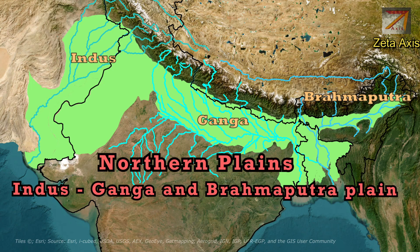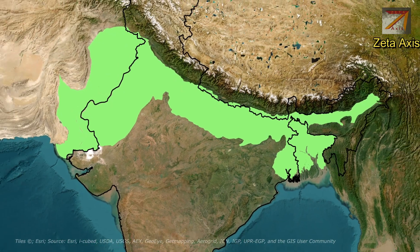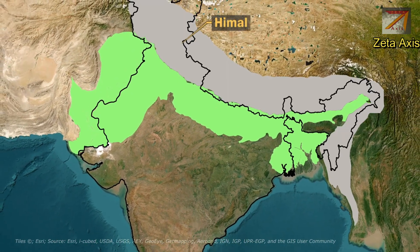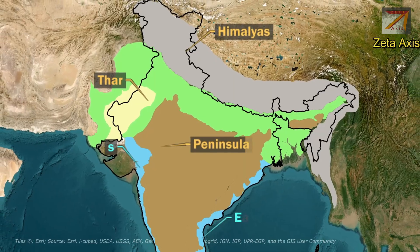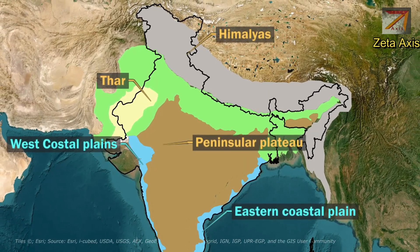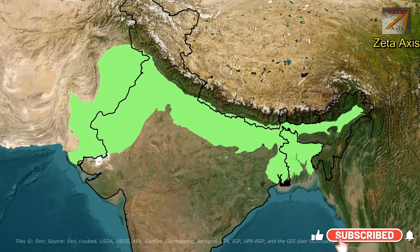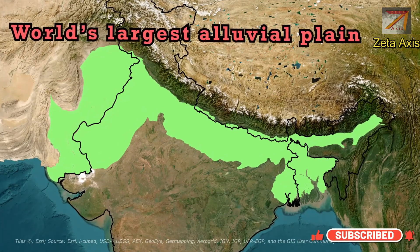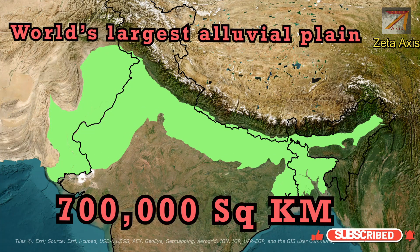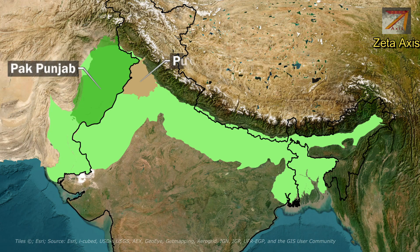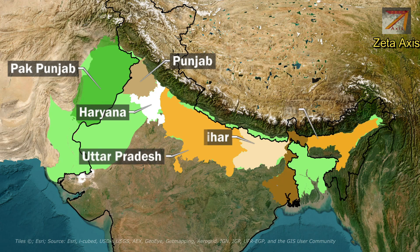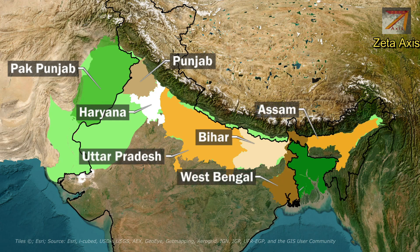The Northern Plains is one of the physiographic divisions of India, along with the Northern Mountains, Thar Desert, Peninsular Plateau region, coastal plains, and islands of India. It is the world's largest alluvial plain, spreading over 700,000 square kilometers, encompassing northern regions of the Indian subcontinent from Pakistani Punjab to Indian Punjab, extending into Haryana, Uttar Pradesh, Bihar, Assam, West Bengal, and the whole of Bangladesh.